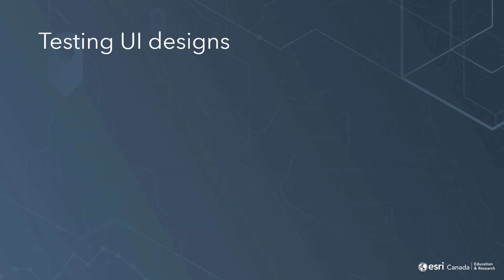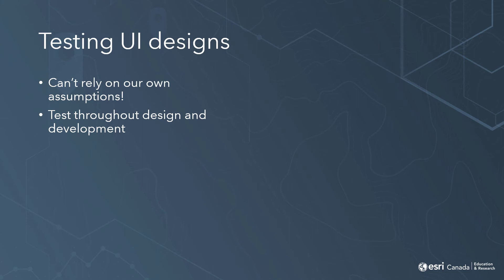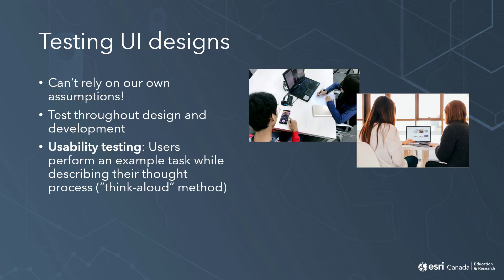Finally, it's important that we test our UI designs with potential users. Users will always see the design differently than we do as the designers, so it's crucial that we not rely on our own assumptions about what works best. It's also a good idea to test the design throughout the design and development process to catch any potential issues as early as possible. One of the most commonly used and effective methods is usability testing, sometimes called user testing. In usability testing, we give users example tasks to complete and ask them to verbalize everything they're thinking — known as the Think Aloud protocol — which gives us insight into where they expect to find features, if things work differently than expected, and anything they find confusing or frustrating.